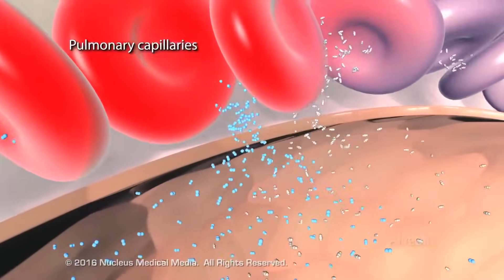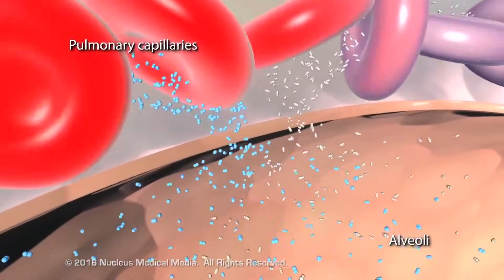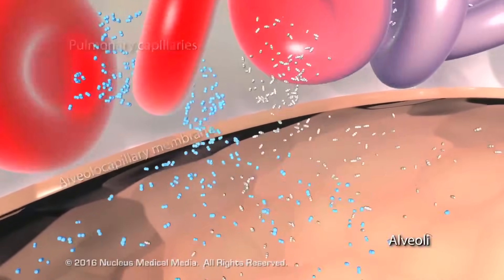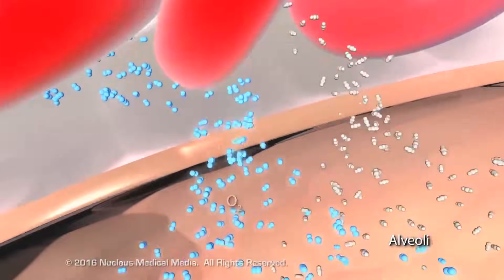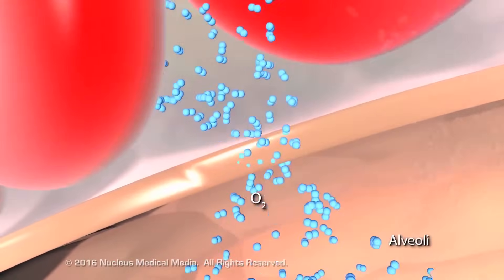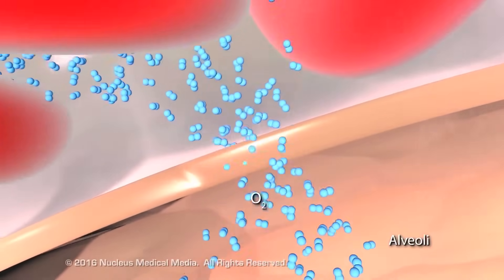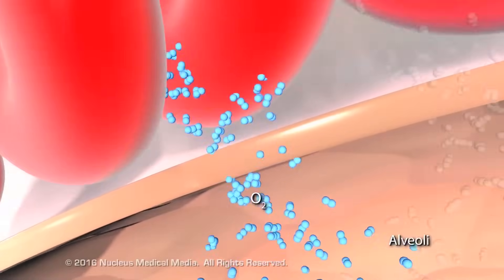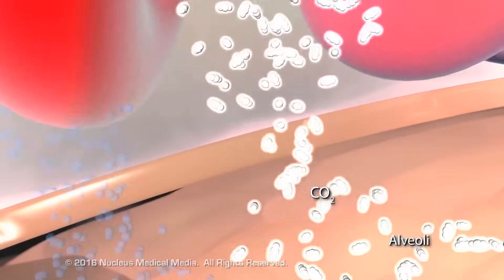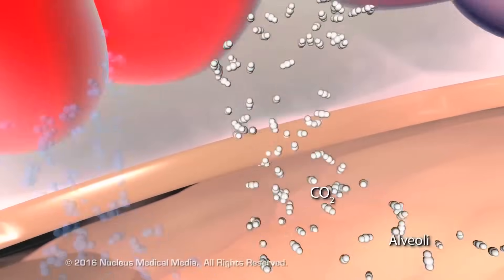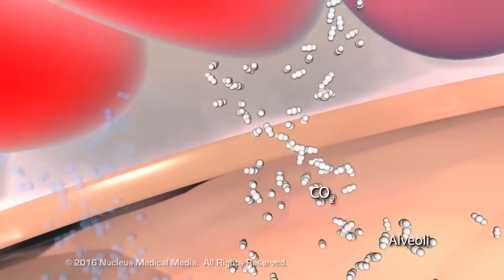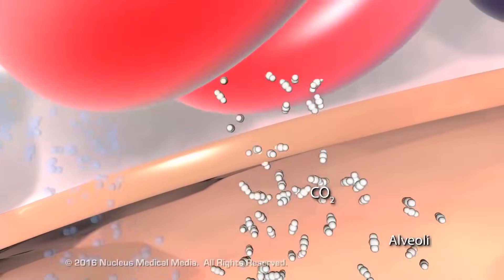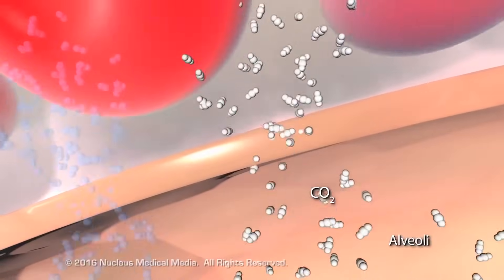Pulmonary capillaries and alveoli share a thin membrane through which gas exchange occurs. Oxygen diffuses from the alveoli into the blood for transport to body tissues, and carbon dioxide, a waste product of cellular processes, diffuses from the blood into the alveoli to be exhaled from the body.